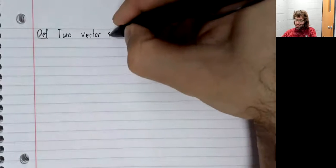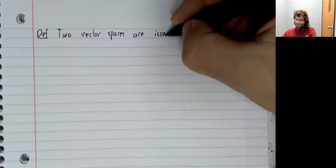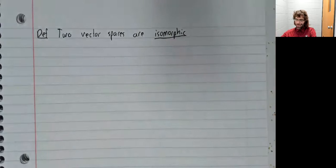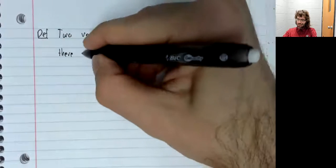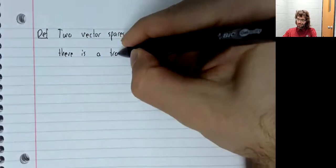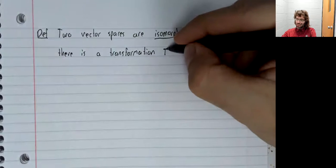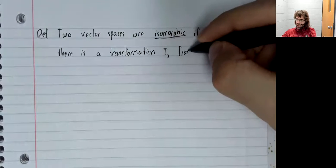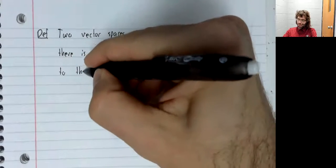Definition: Two vector spaces are isomorphic if there is a transformation T from one to the other.